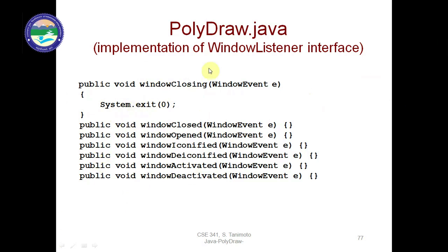There are other functions related to window events: windowClosed, windowOpened, windowIconified, windowDeiconified, windowDeactivated, and windowActivated. The WindowEvent object is commonly used in each function as an argument.